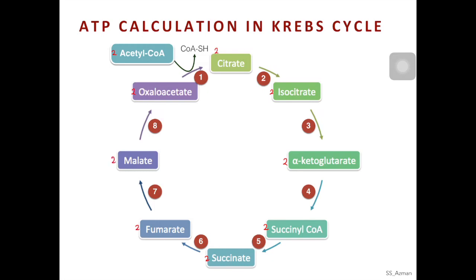When calculating ATP from the Krebs cycle, the important steps are numbers 3, 4, 5, 6, and 8. In step 3, a redox reaction occurs: isocitrate is oxidized into alpha-ketoglutarate, and NAD+ is reduced into NADH. Since we use two isocitrate molecules, two molecules of NAD+ are reduced into two molecules of NADH.